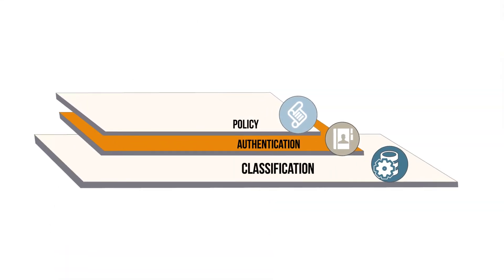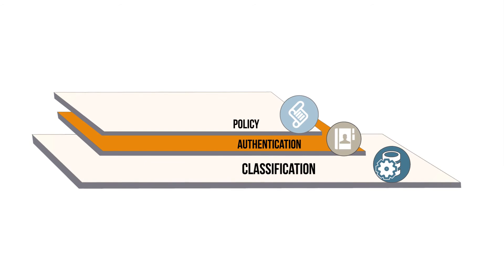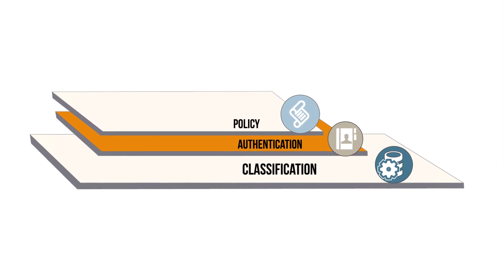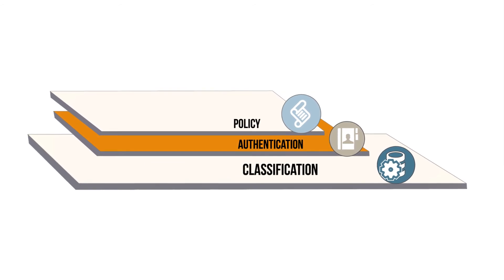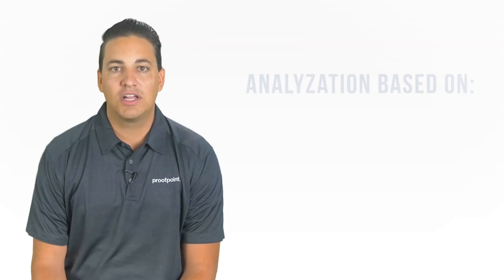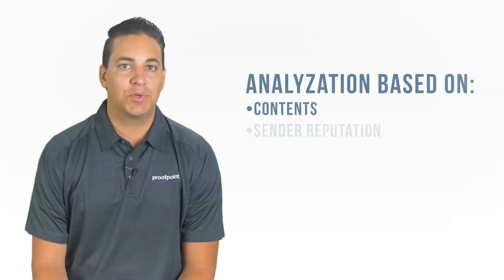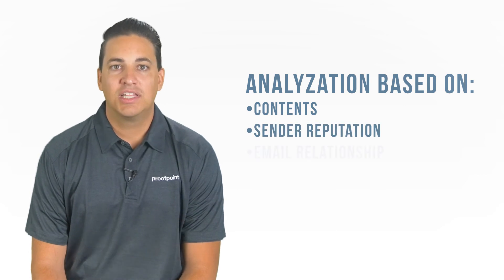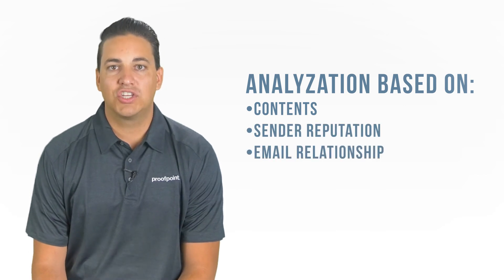Another layer of protection against BEC attacks is dynamic classification. Dynamic classification analyzes and manages email based on several factors: the content within, the sender's reputation, the email relationship, and so on. You can give email an imposter score based on the criteria you choose and decide what to do with the email based on this score.